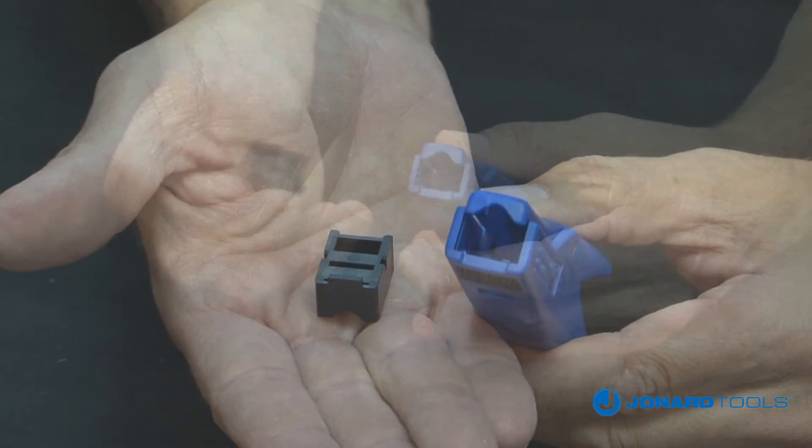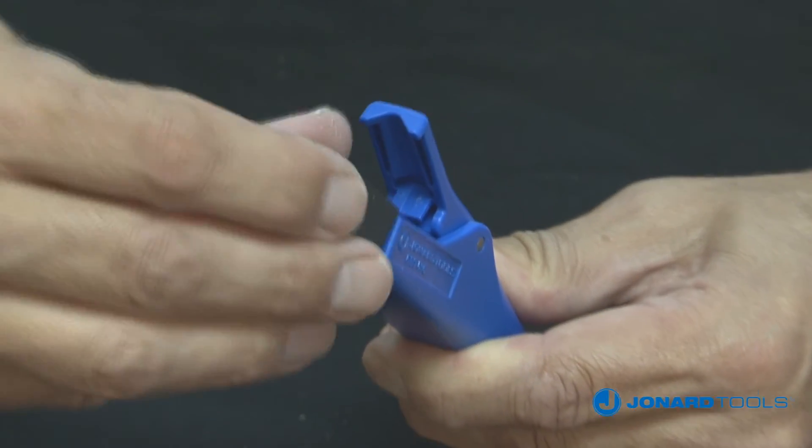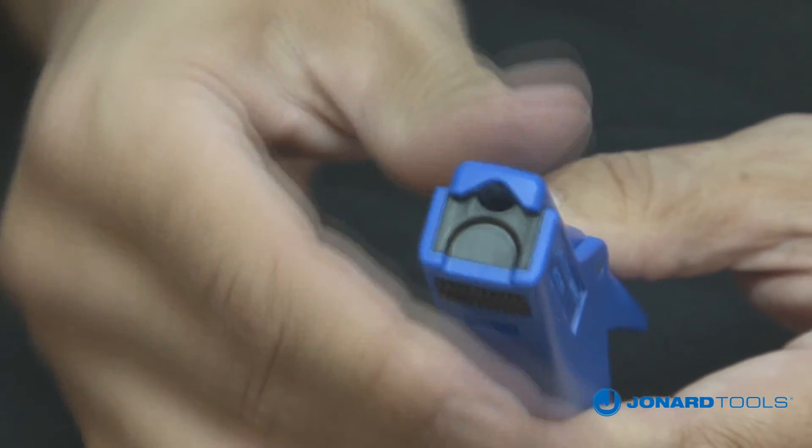To install the new blade cartridge, insert cartridge into tool and close jaws. Give the jaws a squeeze to ensure the blades lock into place.